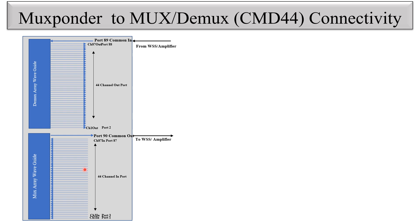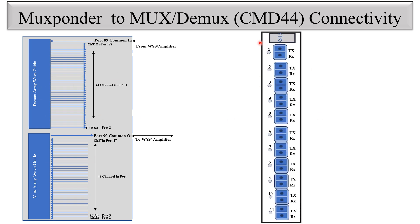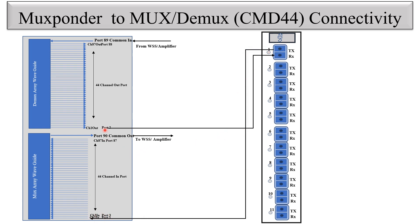MUXponder to MUX-DMux connectivity: you can see here this is the CMD44, this is the MUX-DMux, and this is the MUXponder. You can see one channel — this is the line port of the MUXponder and these are the client ports. The channel output is connected to the MUXponder Rx port, and the TX port is connected to the channel 1 in port. Channel 1 has port number 1 and port number 2: port number 1 is for channel in and port number 2 is for channel out. Channel in is connected to the TX port of the MUXponder, and channel out port is connected to the Rx port of the MUXponder.